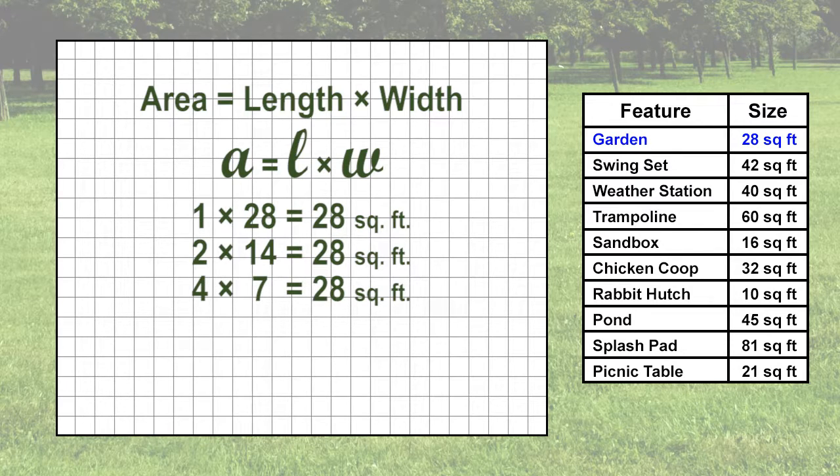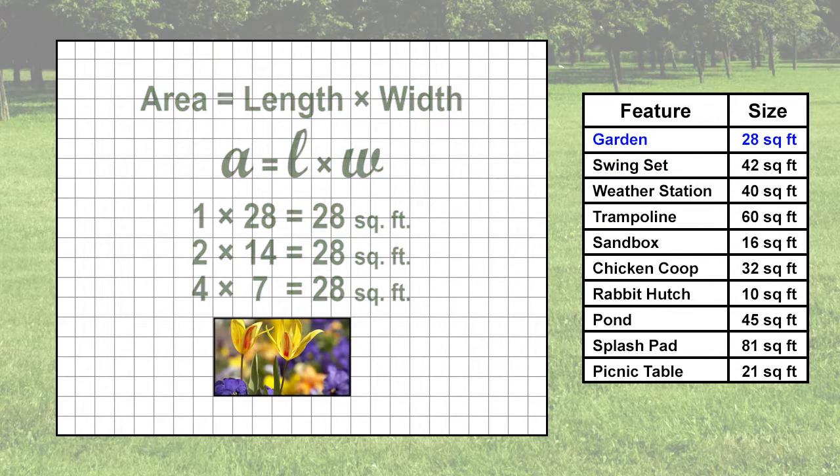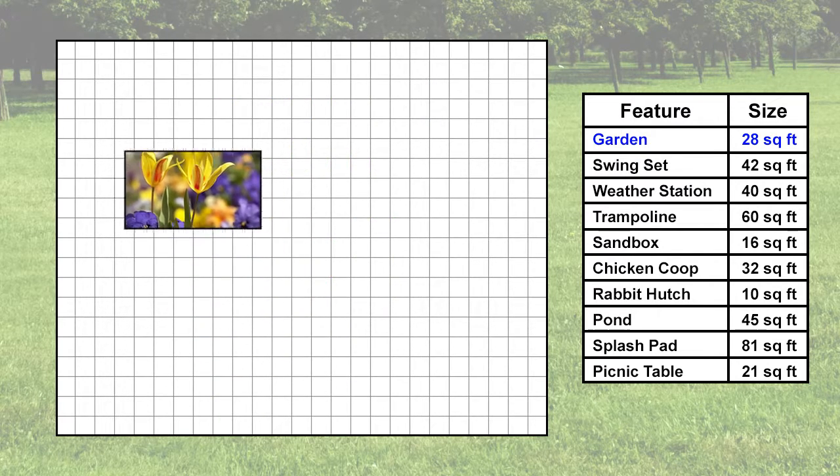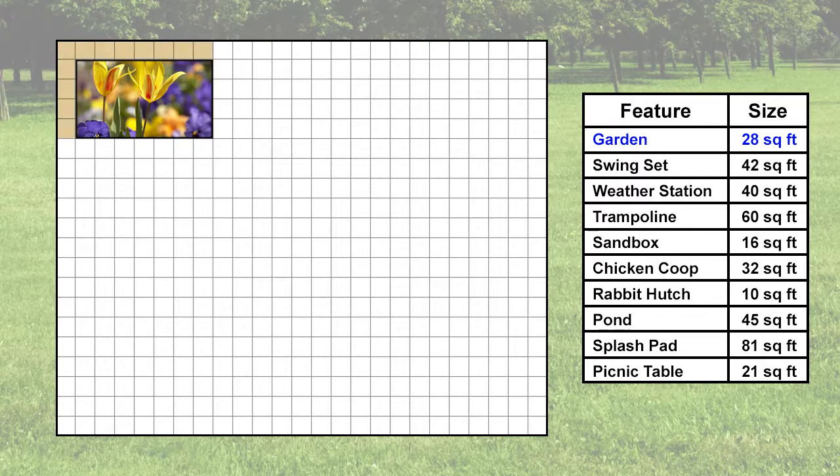Which one of these would be the best shape for a garden? If we want a garden to be more square, we would choose the dimensions 4 by 7 feet. Let's put the garden in the upper left corner. We know that we must leave 1 foot from the outer edge, so we need to have 1 square away from each edge.